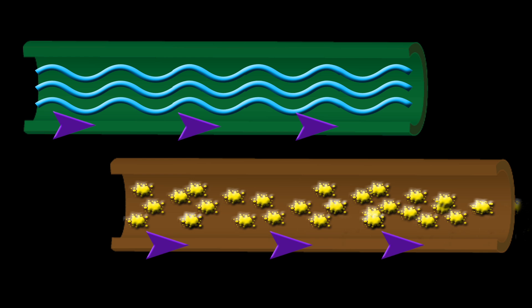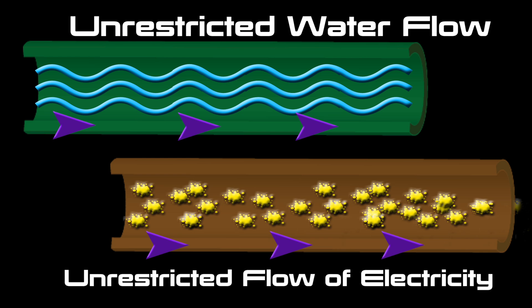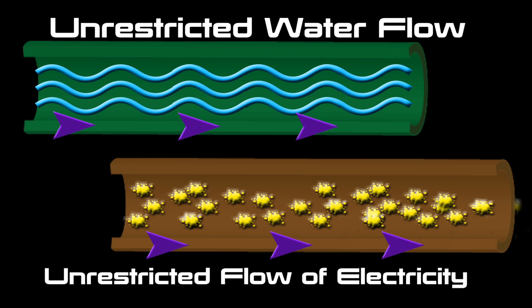Electrical resistance is best compared to the flow of water through a hose. When unrestricted, water flows freely as does electricity through a piece of wire.